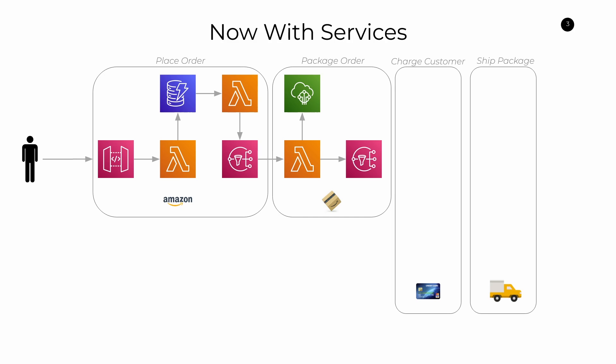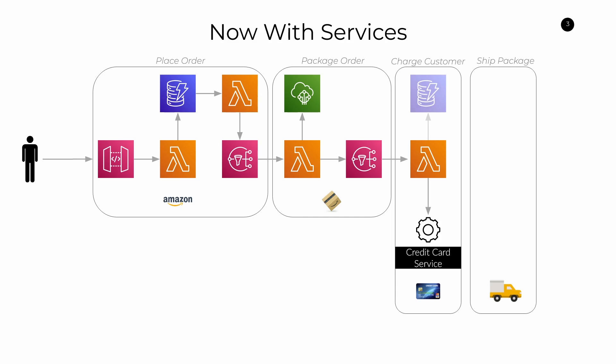Next, we need to move to the part where we actually charge the customer. We're going to have another Lambda function here. This function is responsible for communicating with a third-party service — a credit card service in this case. Once we're successful upon calling that service, we can save the state of that charge into a database so we don't duplicate it, and we have a record of it before moving on to the final step, which is shipping of the package. We trigger a Lambda function as a result of that DynamoDB insert event. That Lambda function calls an IoT-based service to broadcast a message instructing a delivery driver to pick up a package and deliver it to a particular address.